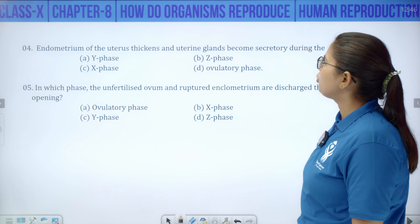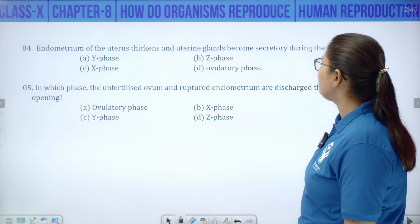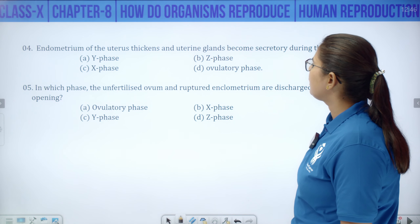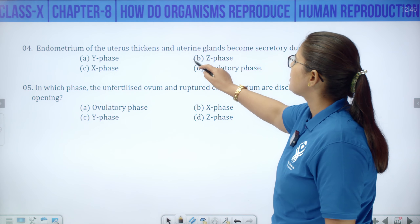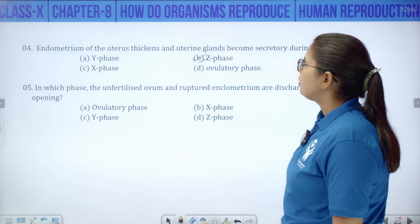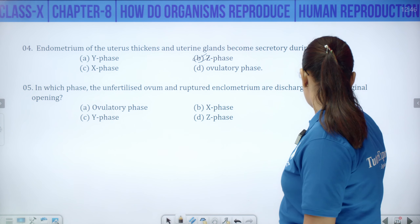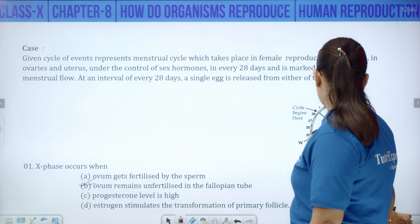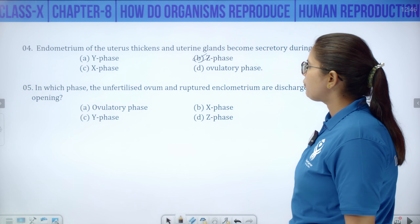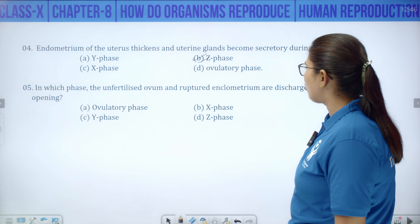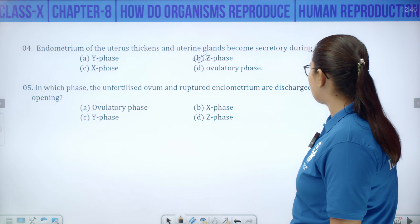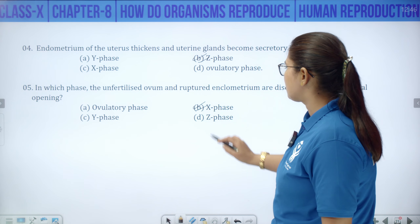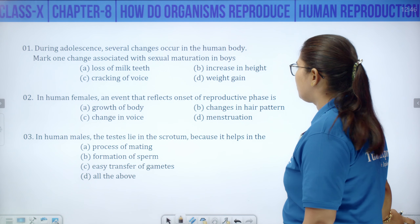The Y-phase is the follicular or proliferative phase. In the Z-phase, the endometrium of the uterus thickens and uterine glands become secretory. In the X-phase, the unfertilized ovum and the ruptured endometrium are discharged through the vagina.